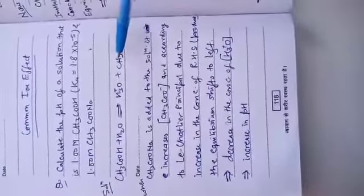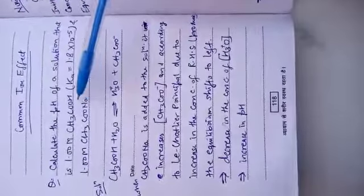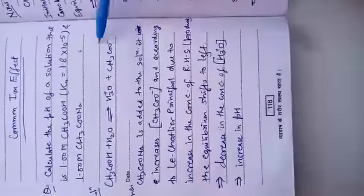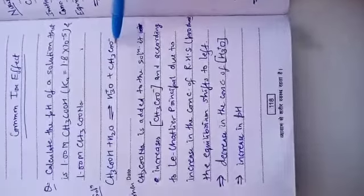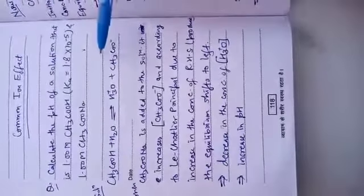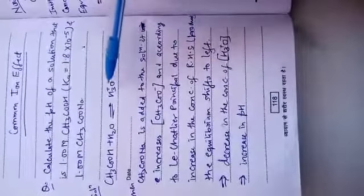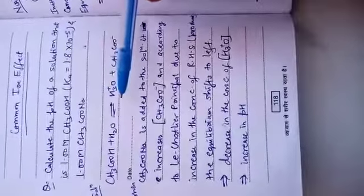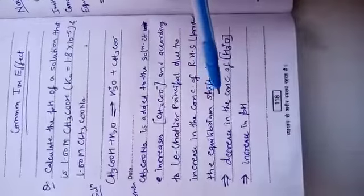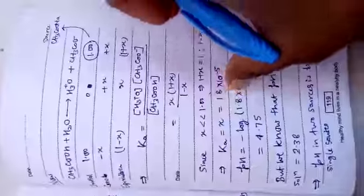Now when sodium acetate is added to the solution, it will increase the concentration of acetate ion. And according to Le Chatelier's principle, due to increase in the concentration of right hand side product, the equilibrium shifts towards left. It means there is a decrease in the concentration of H3O+ ion, which means decrease in concentration of H+ ion, and this increases the pH value. Now let's calculate the pH of this buffer solution.